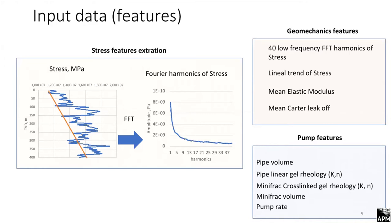To decrease its dimension, we use fast Fourier transform, and we decrease high spatial frequencies. Only 40 low frequency harmonics of stress are used as features. All other geomechanical features, such as elastic modulus and leak-off coefficients, are just averaged to one number. Pumping features are quite simple because in this case we're creating a metamodel for mini-frac, and all features are responsible only for pipe friction and for pumping of crosslinked gel.